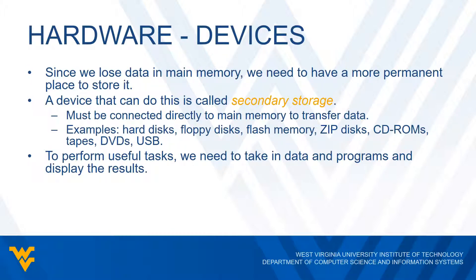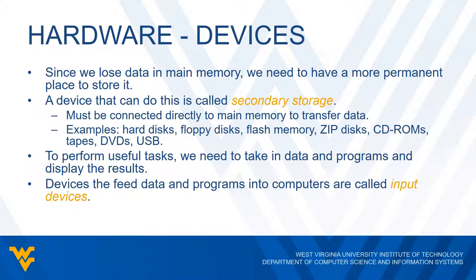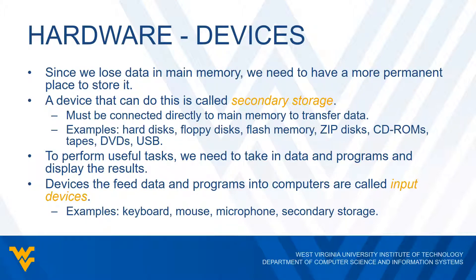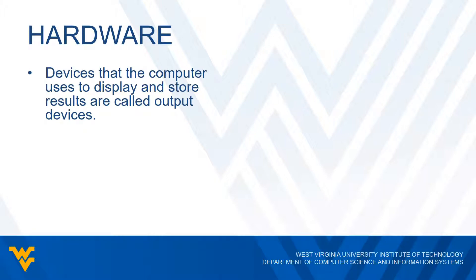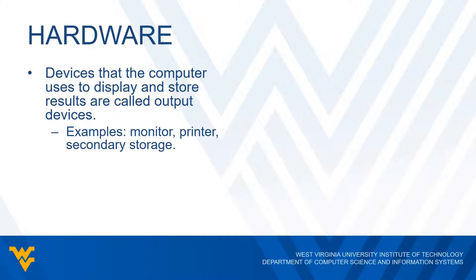If we want to do anything meaningful with our data, we need to be able to read in data and programs and display the results properly. Devices that read in data and bring programs to the computer are called input devices. Examples include the keyboard, the mouse, the microphone, and some types of secondary storage. Any hardware device that sends information into the computer is an input device. Any device that outputs the results of your data or programs is an output device — such as monitors that display results on a screen, printers that print your data, and other types of secondary storage devices.